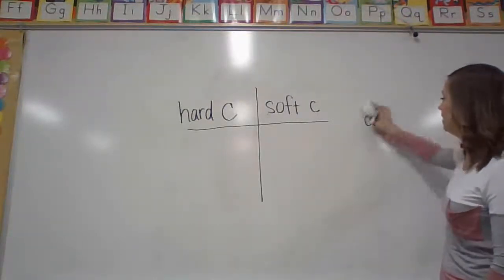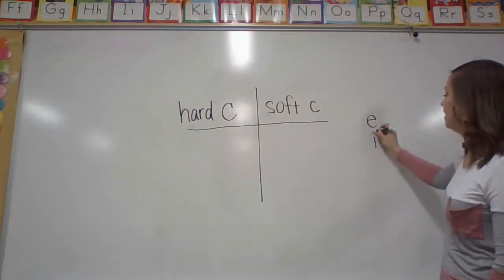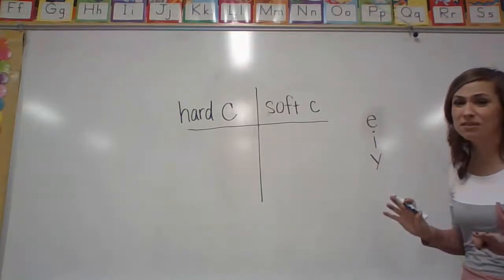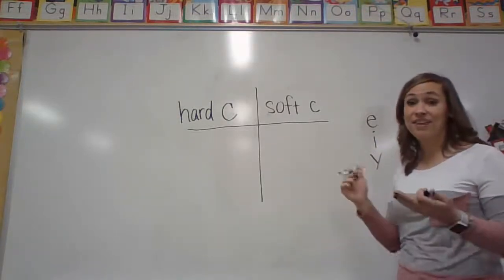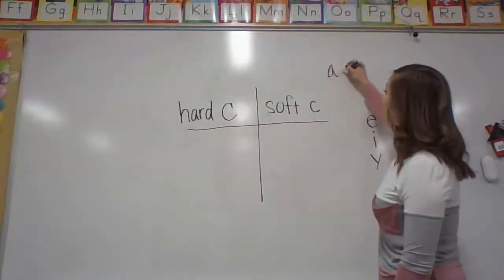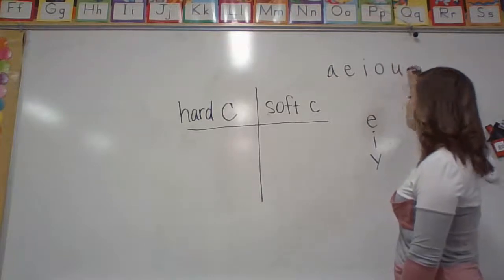Look, not A. E, I, Y. Now, do you remember your vowels? Very good. So your vowels are A, E, I, O, U. Right?